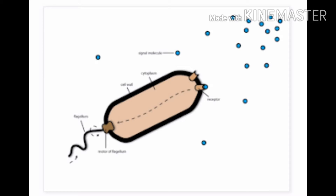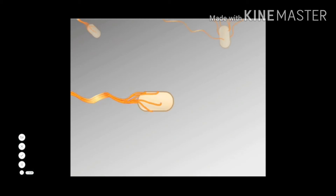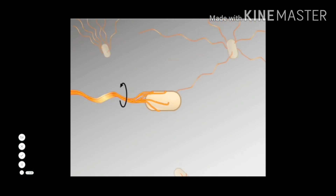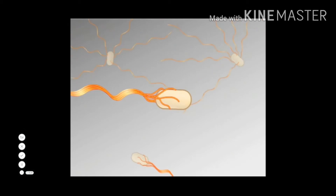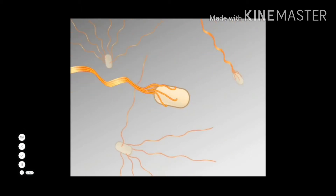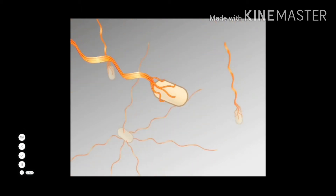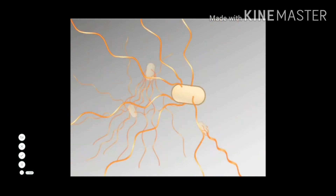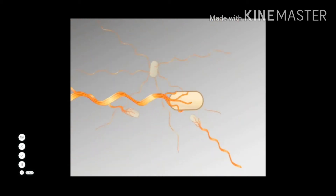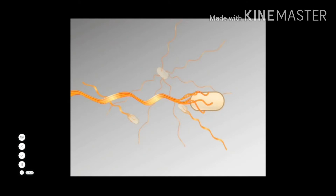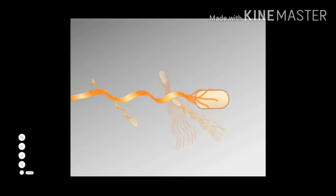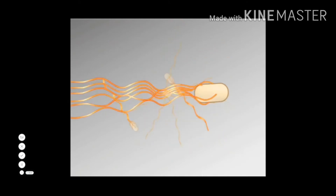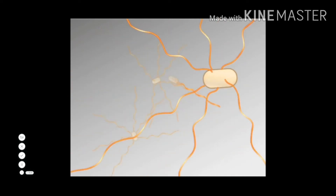For example, if bacteria finds a nutrient in its environment, then first of all it will sense the presence of this nutrient and then it will respond by moving towards it. In another example, if there is presence of a toxin in the environment, then bacteria will sense the presence of this toxin and will move away from it as a response to the environmental signal.